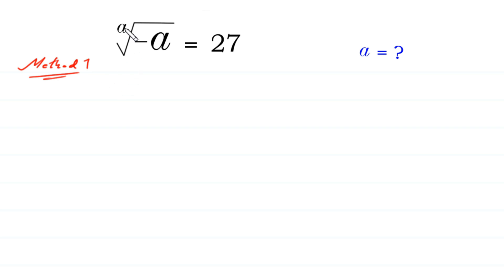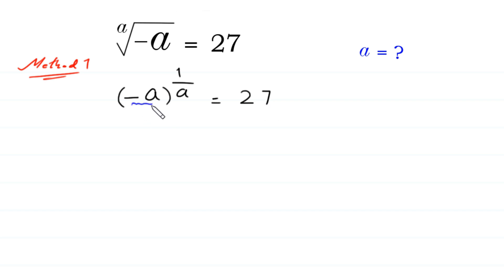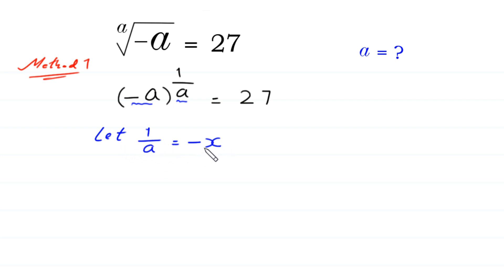In Method 1, we can write this ath root of negative a as negative a to the power 1 over a, which is equal to 27. Because here we have negative a, we suppose that 1 over a is equal to negative x. If we multiply both sides by a and divide both sides by x, this implies negative a is equal to 1 over x.